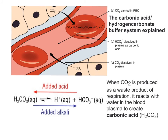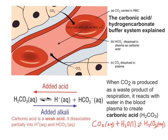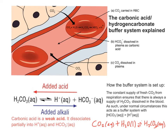When your respiring cells produce carbon dioxide as a waste product, the carbon dioxide reacts with the water in the blood plasma to create carbonic acid, which is H2CO3. As you can see from the main equation, H2CO3 is a weak acid. When it dissociates, it produces H+ and hydrogen carbonate ions, HCO3-. The constant supply of fresh carbon dioxide from respiration ensures there's always a supply of carbonic acid dissolved in the blood, and under normal circumstances this can act as a buffer system, with the concentration of HCO3- ions exceeding the concentration of H+ ions.